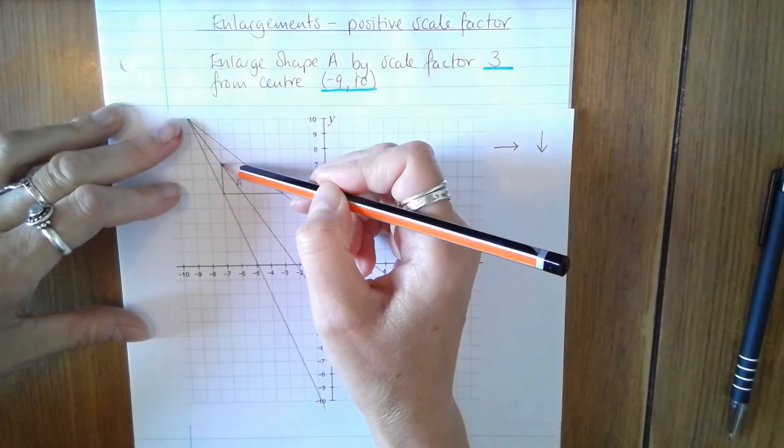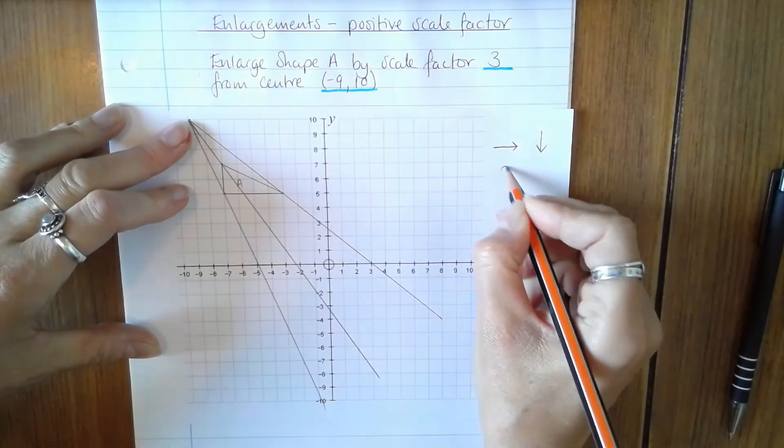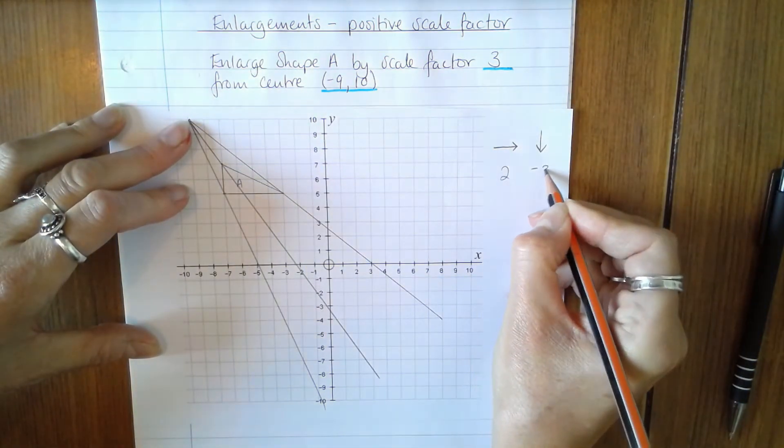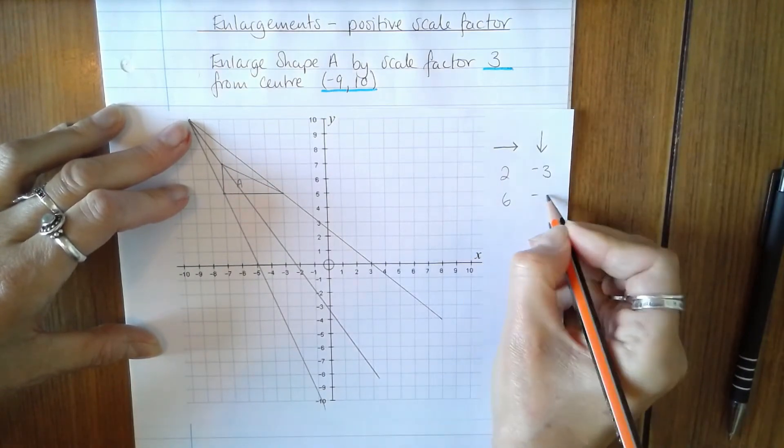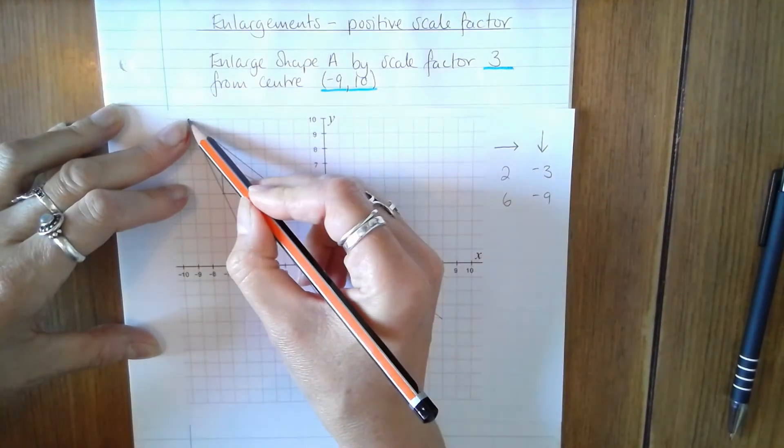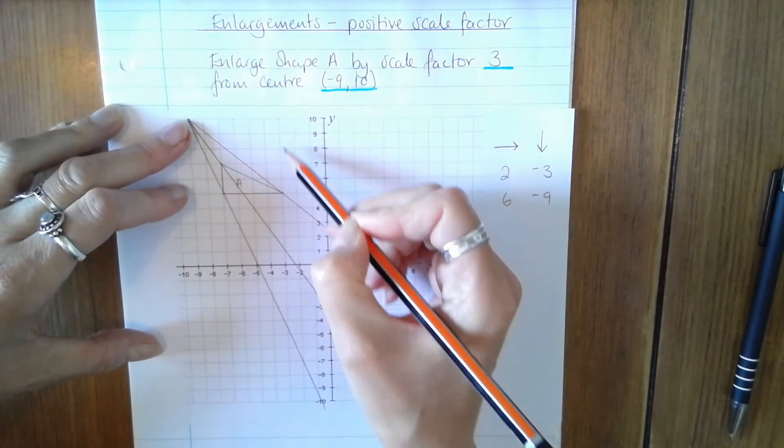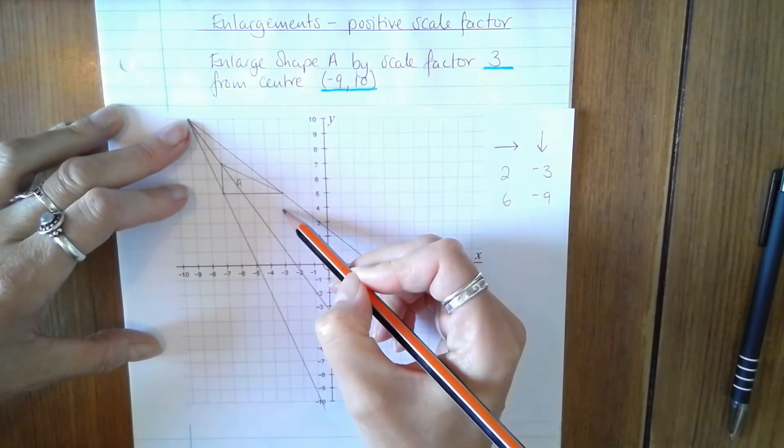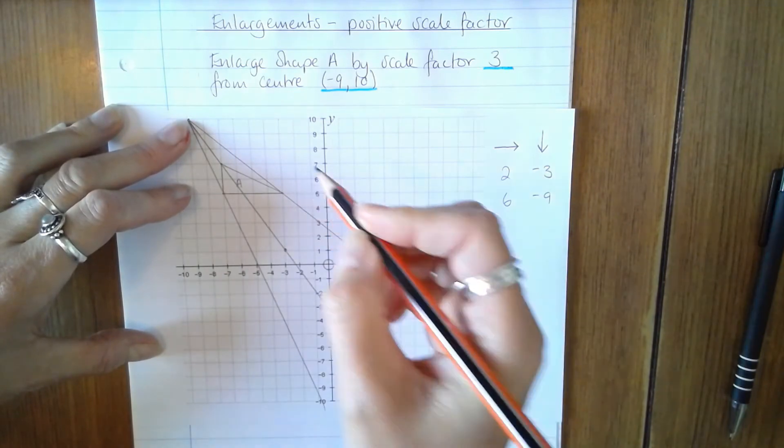So the first vertex here is two across and three down, two across and negative three. Multiply those by three, six across and nine down. So I count six squares across and three, six, nine down and mark the vertex on there, and it's on the grid line, so that's really good news.